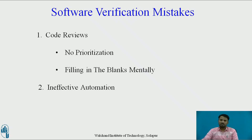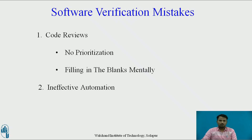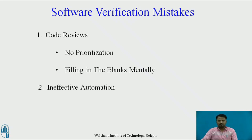The next mistake is filling in blanks mentally. Suppose in an HTML code you have a missing closing bracket — it will not give an error, but the output will be different. It is much better to review the code out loud, especially for sensitive components. The next mistake is ineffective automation. Software professionals love to automate tasks; however, you should not spend too much time automating routine tasks — automation should be effective.